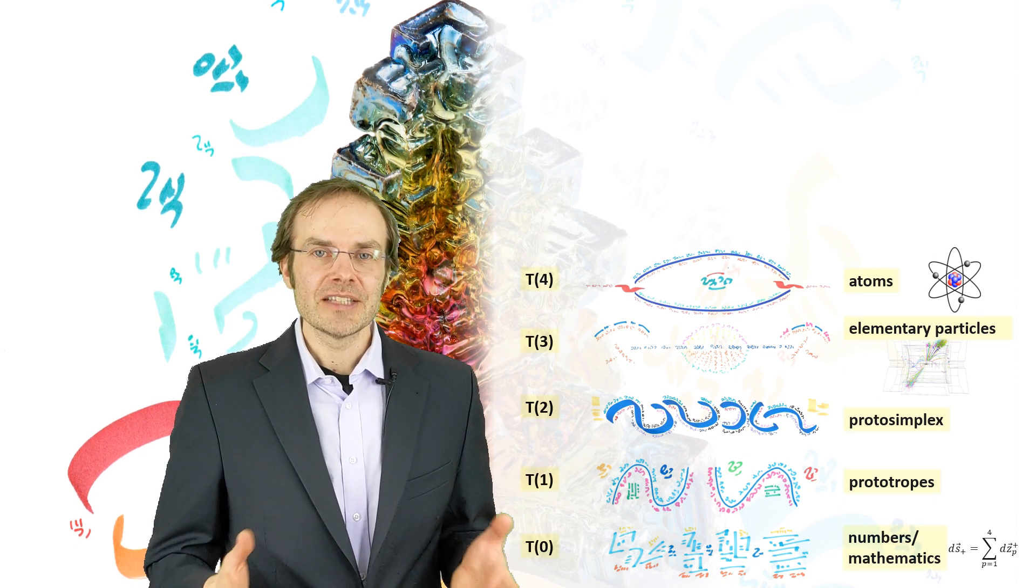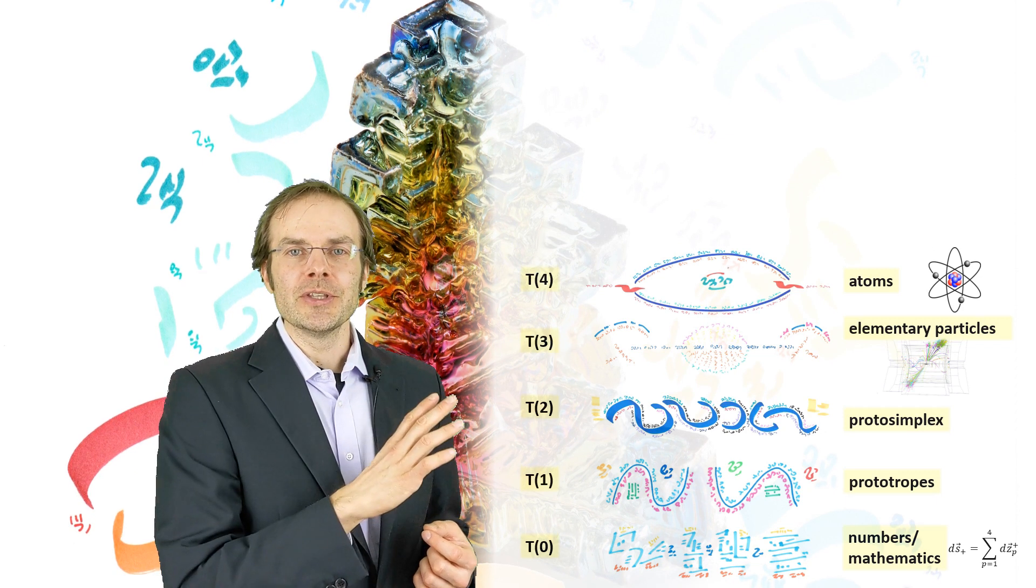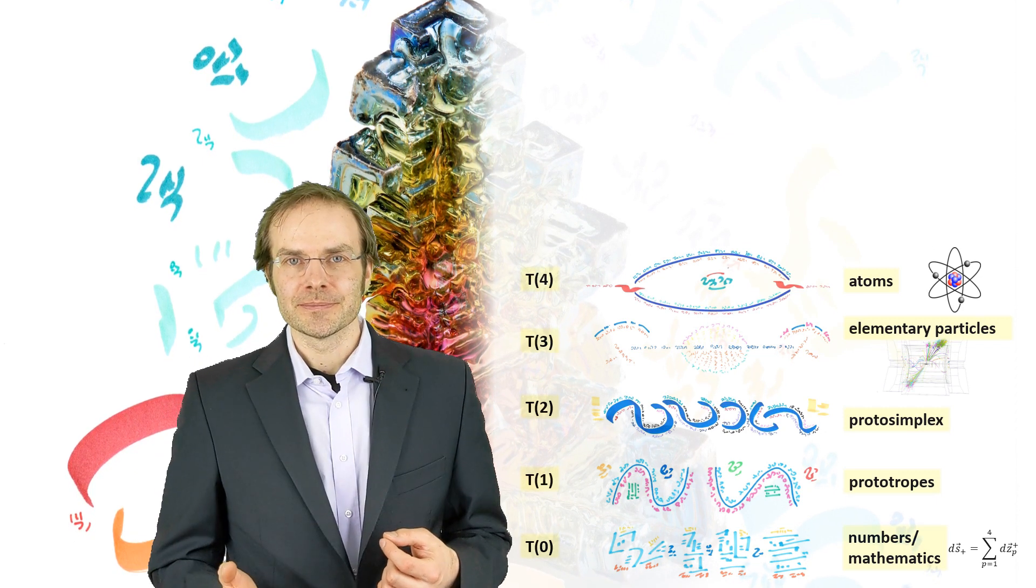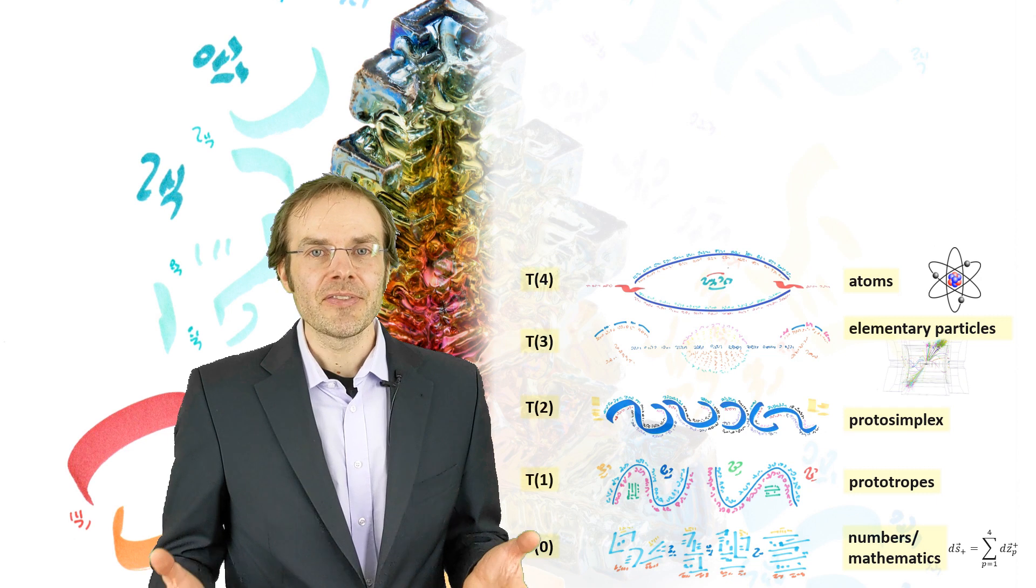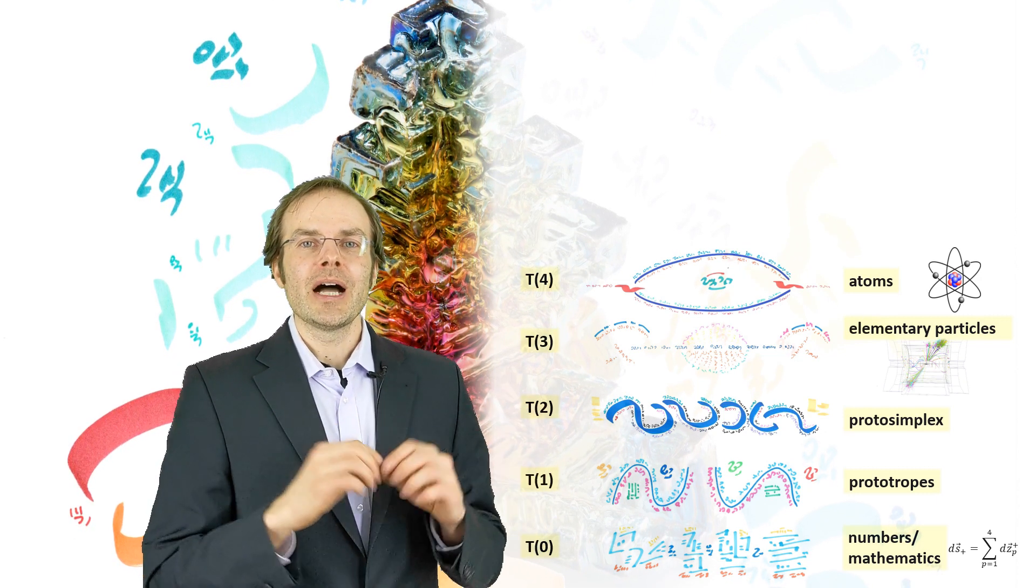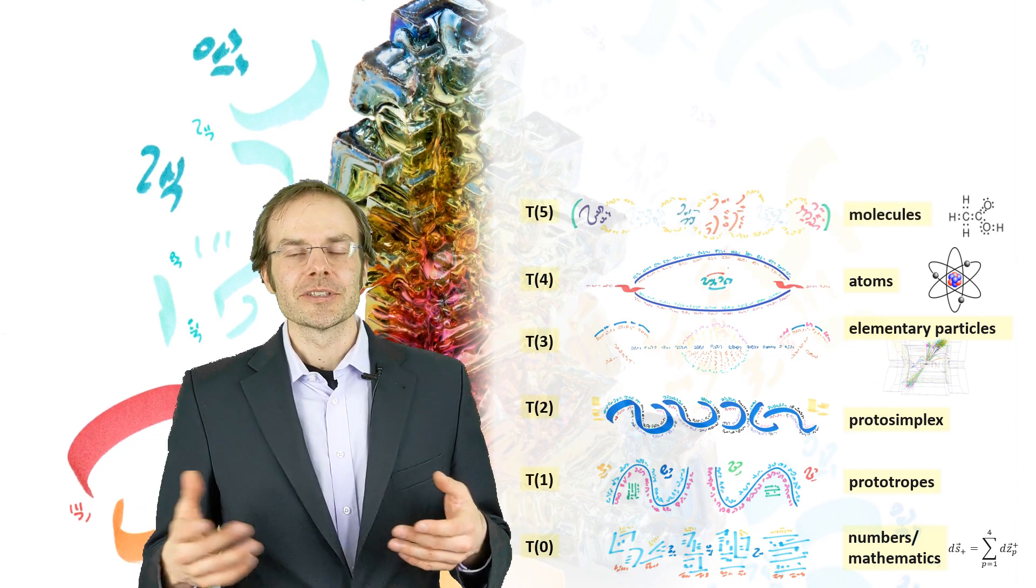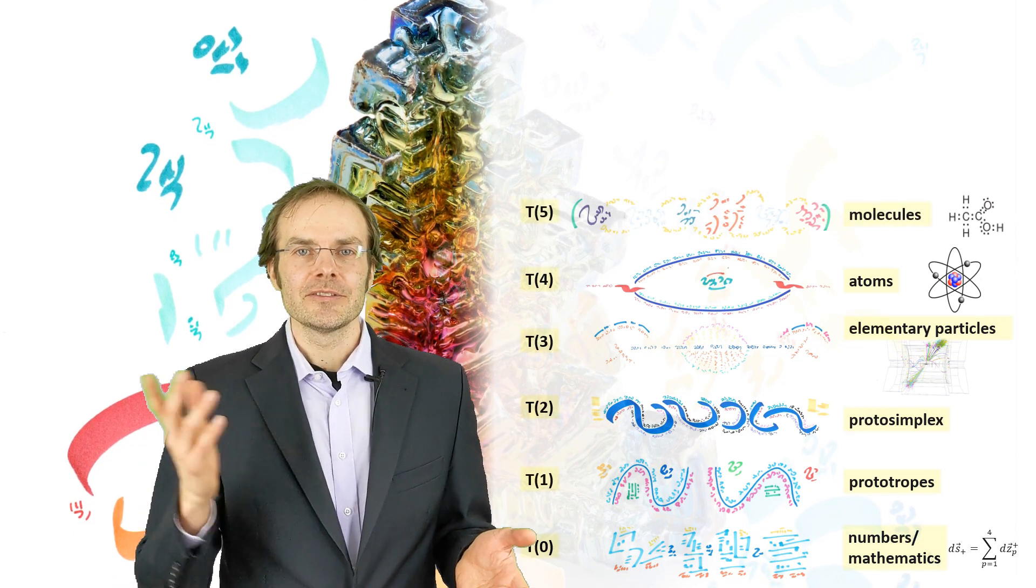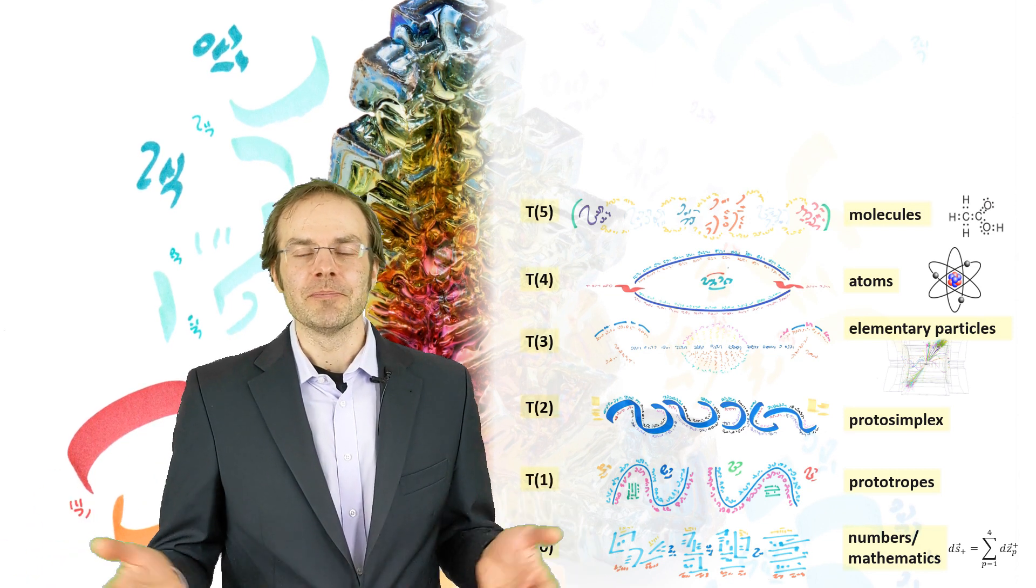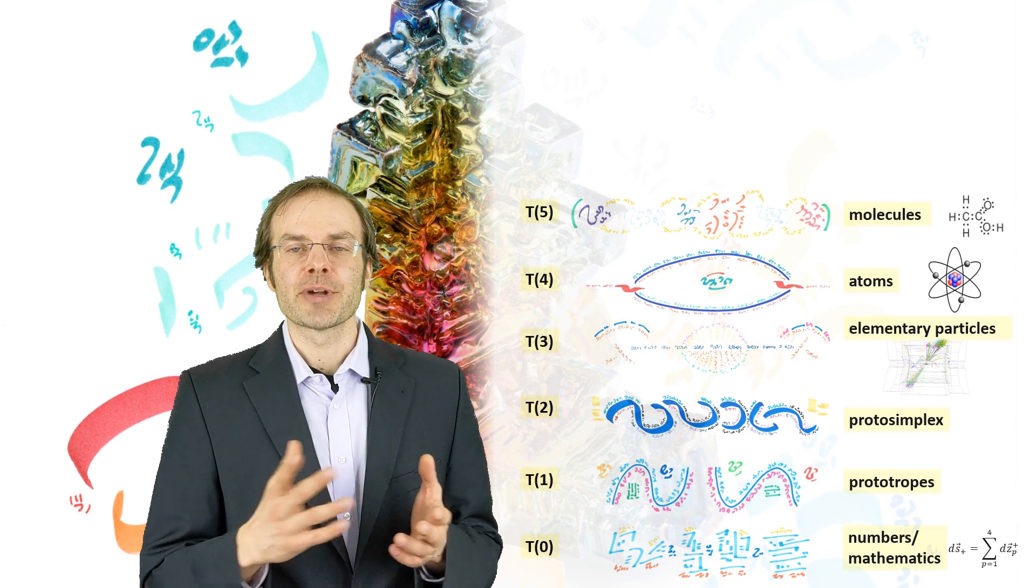Now you see it's getting easier because we are venturing into realms which we know from our school education. What's the next thing after atoms? Atoms form chemical bonds, and from those arise all the molecules that surround us—like CO2, water, aspirin, etc.—also macromolecules and crystal structures.